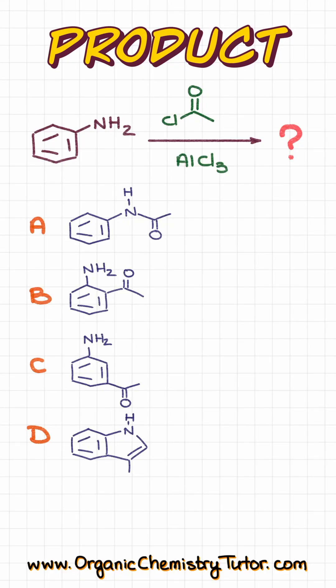So what's going to be the major product in this reaction? Well, let's see. We have an aromatic compound with an electron-donating group, and we are trying to react it with the acid chloride in the presence of the Lewis acid catalyst.